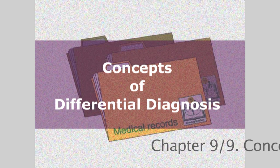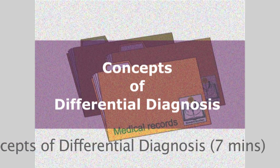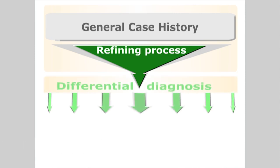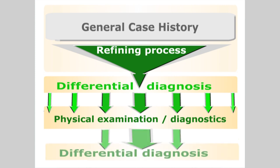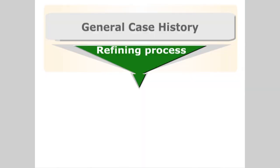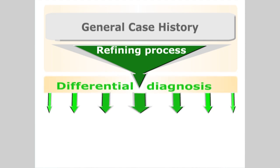Throughout the clinical encounter, a refining process should be taking place based on the patient's story and your own observations. The end stage of this ongoing refining process will be the foremost stage of differential diagnosis. At the beginning of the consultation, there may be several possible pathologies explaining the patient's condition, but as more information is gathered, the clinician is able to identify common threads that will lead towards the direction of the most probable diagnosis.